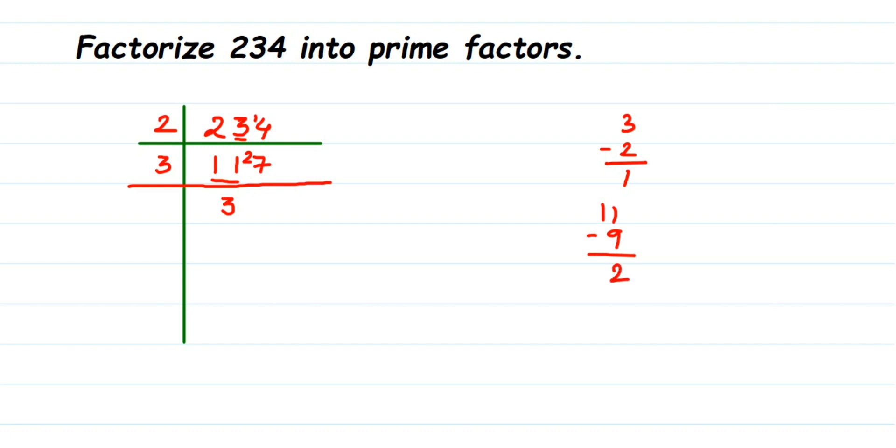We got 39. This again goes in 3. 3 ones are 3, and 3 threes are 9. We got 13 now, and 13 is a prime number, so 13 ones are 13. So we got here all the prime factors.